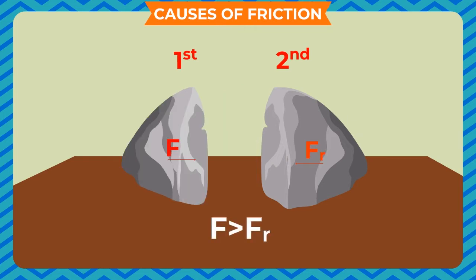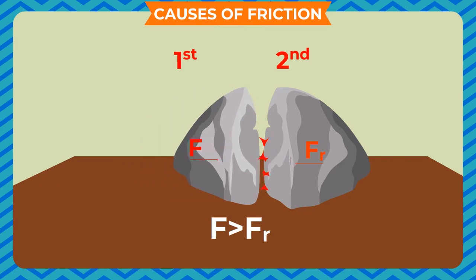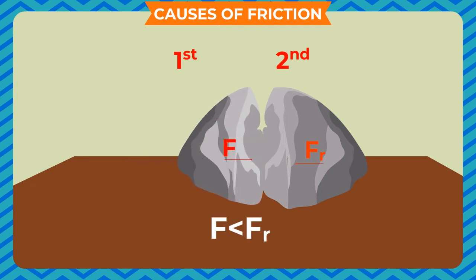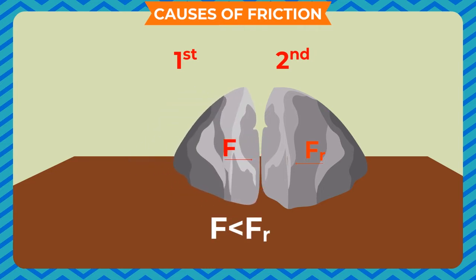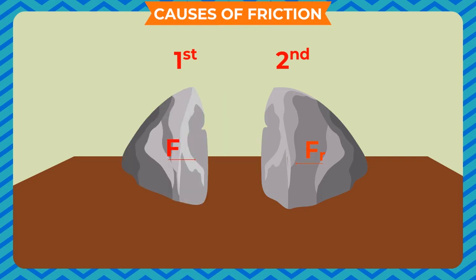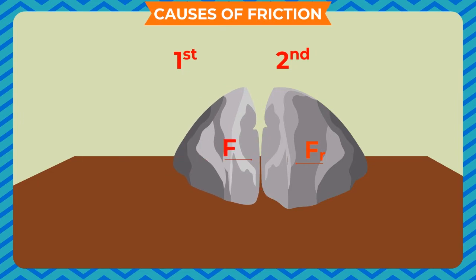If F is greater than Fr, the object will slide, and the friction in this case is called kinetic friction or moving friction. If F is less than Fr, the object will not move and will remain static, and the friction in this case is called static friction. Static friction resists the beginning of motion, while kinetic friction tends to slow down the motion of the moving body.